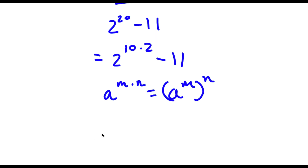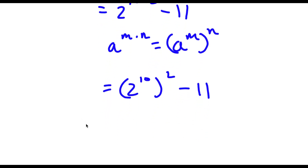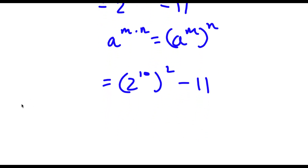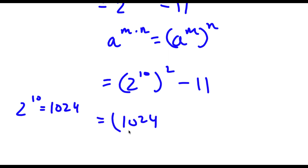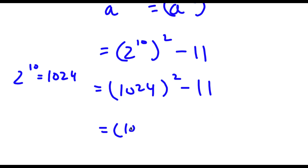So in this case, this is going to equal 2 to the power of 10 to the power of 2, minus 11. Now, 2 to the power of 10 is equal to 1024. So now I have 1024 to the power of 2 minus 11. And 1024 I can rewrite as 1000 plus 24, to the power of 2, minus 11.